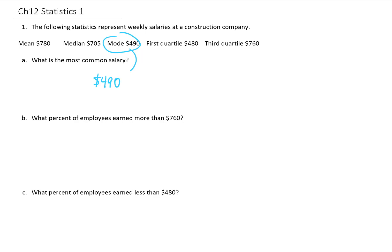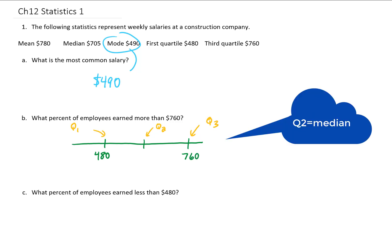The next question is, what percent of employees earned more than $760? Let's take a look at our quartiles. If we draw a number line representing our data, our three quartiles go here. We know that our first quartile is 480, our third quartile is 760, and our second quartile is the same thing as our median, so that's 705.